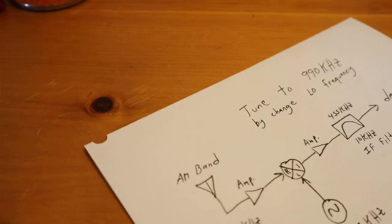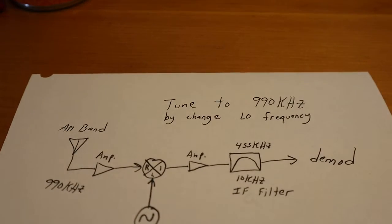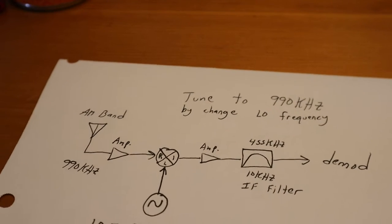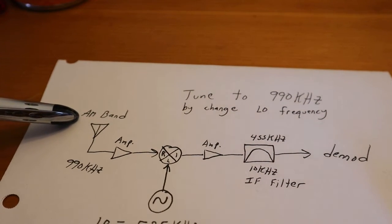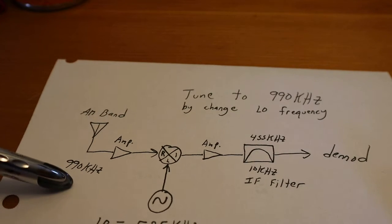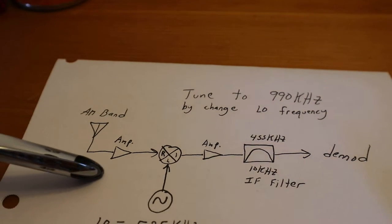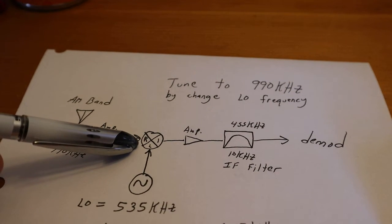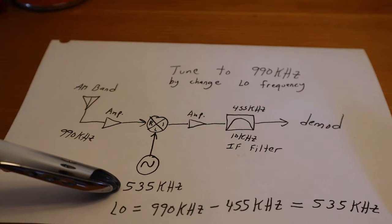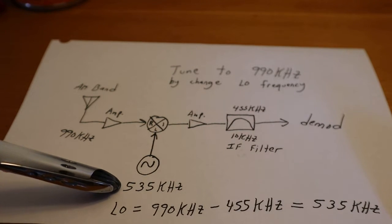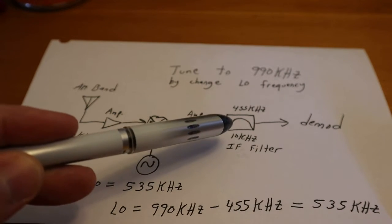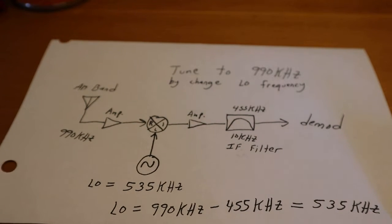All right, so let's go through the example here. Like I said, we wanted to tune to 990 kHz. So we got the antenna up here. It's picking up the whole AM band coming down here, but we're really only interested in this 990 kHz. It goes into this mixer. And we're going to tune the LO to be 535 kHz, such that 990 minus 535 works out to be exactly 455 kHz.